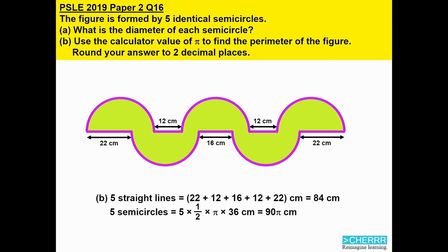To find the total perimeter, all we need to do is add 84 to your 90 pi. Use the calculator pi to do the conversion. We will get 366.7425 centimeters.